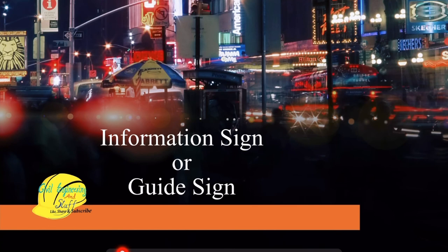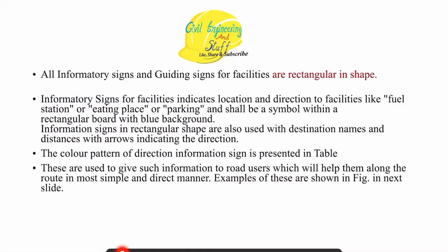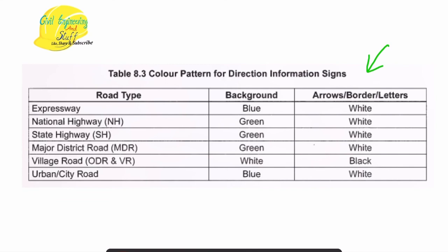The third category is the informatory sign or guide sign. As the name suggests, they give information about the facilities available at the sides of the road. These are rectangular in shape. The color pattern depends upon certain parameters — specifically the type of road on which they are installed.